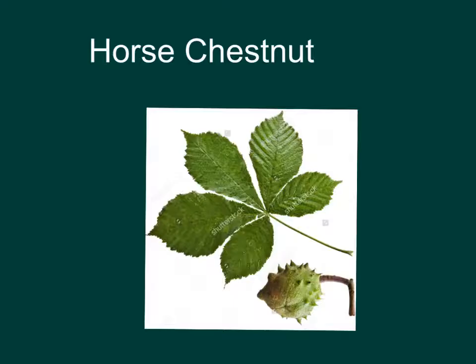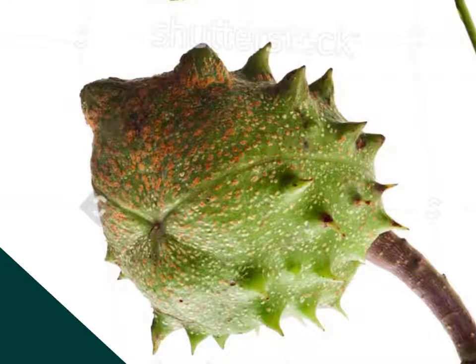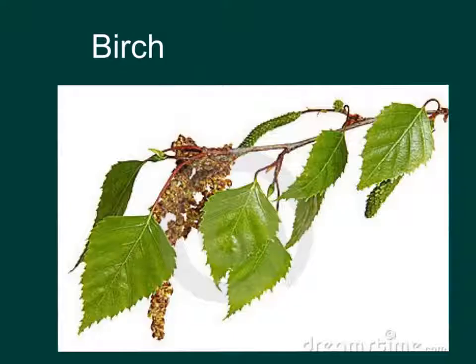The horse chestnut tree has a very distinctive leaf called the digitate, and the conker which is the fruit of the tree.